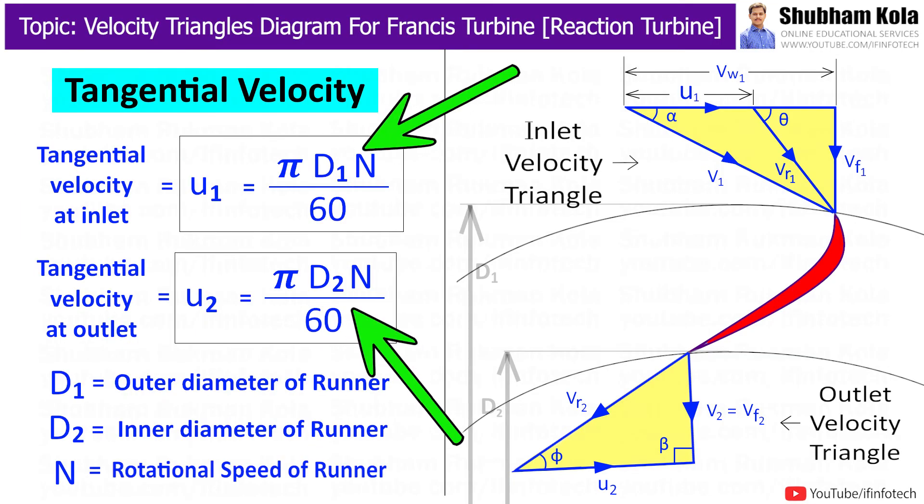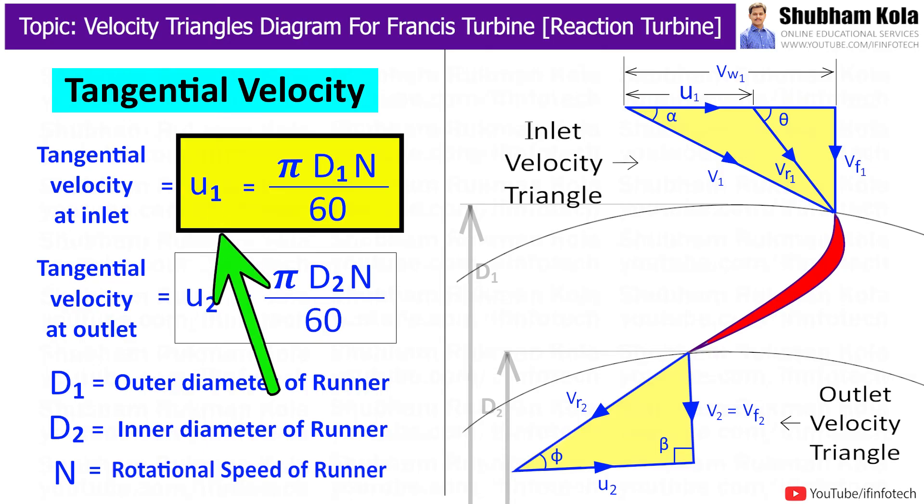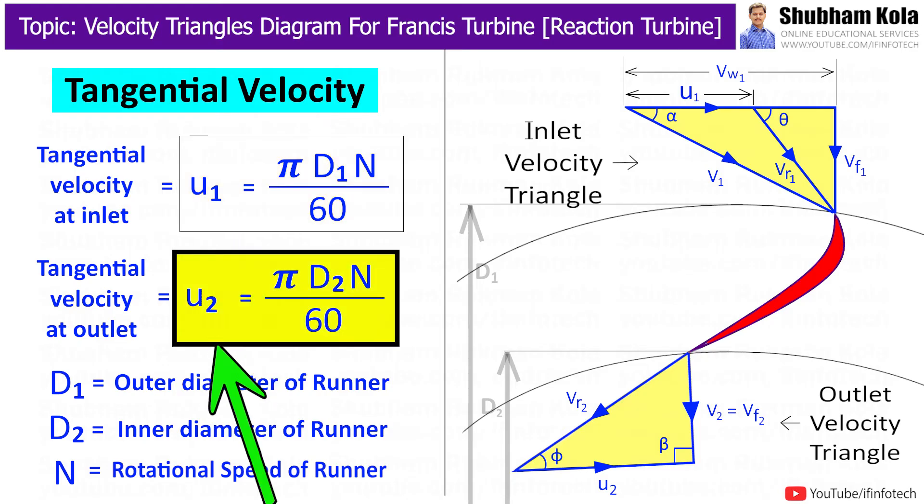Now here d1 and d2 are the outer and inner diameters of runner rotating at n rpm. So, tangential velocity at inlet is denoted as u1 and is given by formula pi d1 n by 60. And tangential velocity at outlet is denoted as u2 which is given by formula pi d2 n by 60.